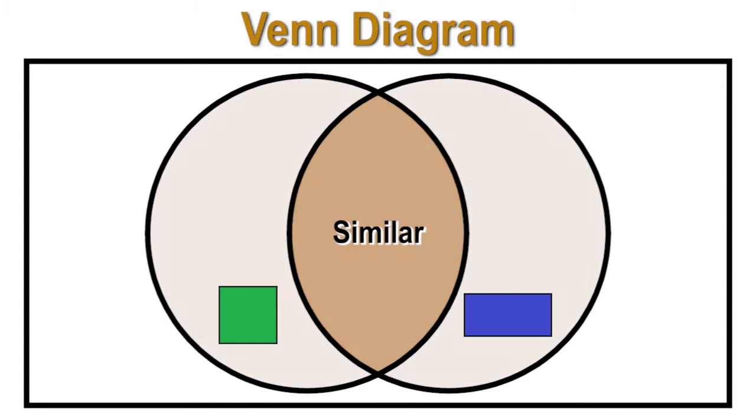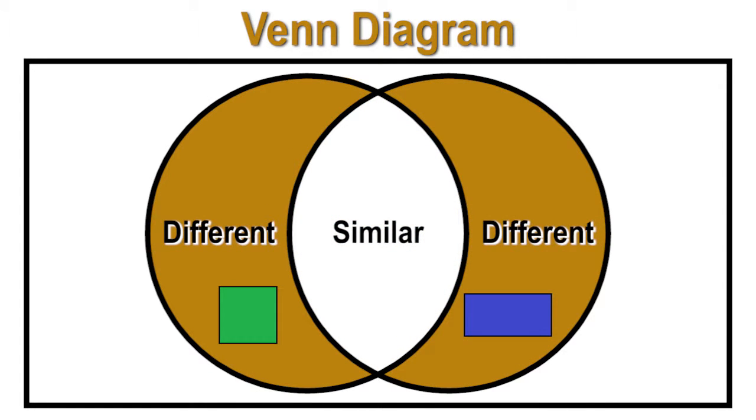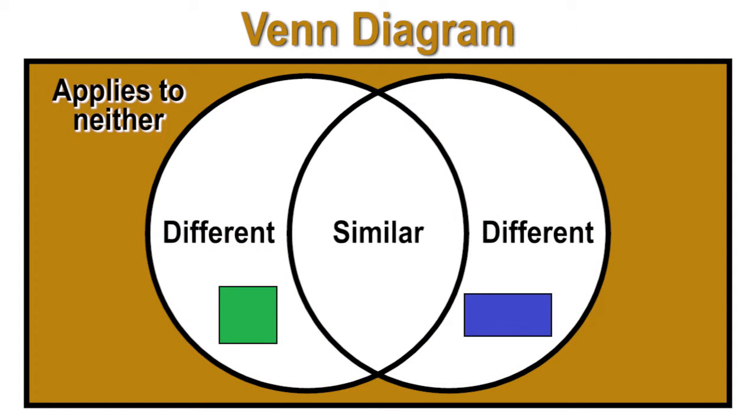The parts of the circles on the outside of the centerpiece is where the properties are different. The space in the rectangle that surrounds the Venn diagram is where properties are written that don't belong to either shape.